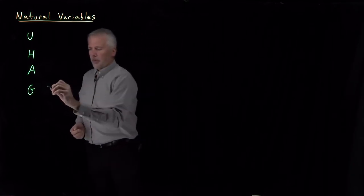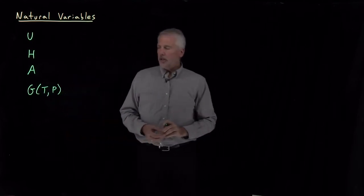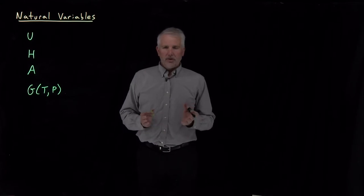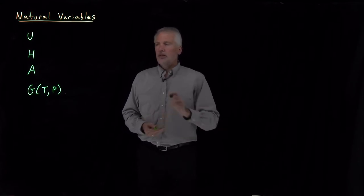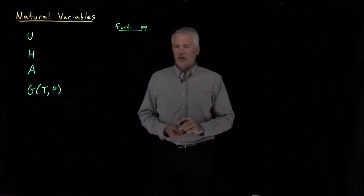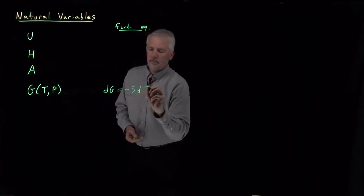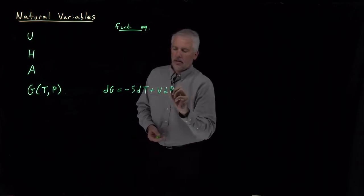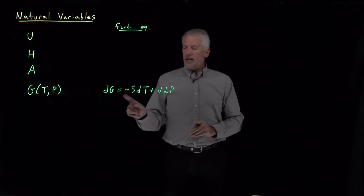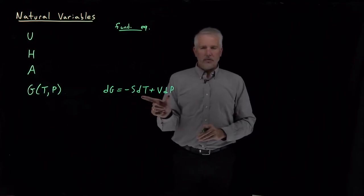Most recently we've seen that the natural variables of the Gibbs free energy — in fact, the reason we constructed the Gibbs free energy was to find a function whose natural variables were T and P. Natural variables mean two related but separate things. First of all, if we write the fundamental equations for these energies, the fundamental equation for dG is minus s dT plus V dP. When written as a function of T and P, the fundamental equation is quite simple.